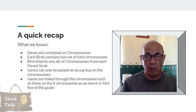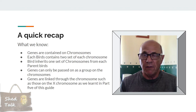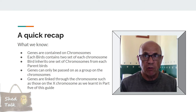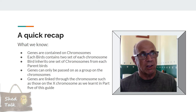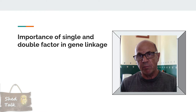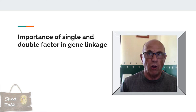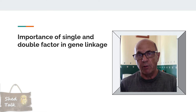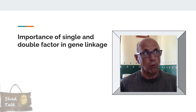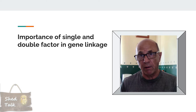If you need a quick revision of that, go back and have a look at part 5 where we covered sex-linked genes. Now, the importance of single and double factor in gene linkage: a single factor means the bird contains one of a type of gene. If a spangle is single factor, it contains only a single mutated spangle gene and the other would be wild type. A double factor would be two mutated spangle genes and none of the wild type.